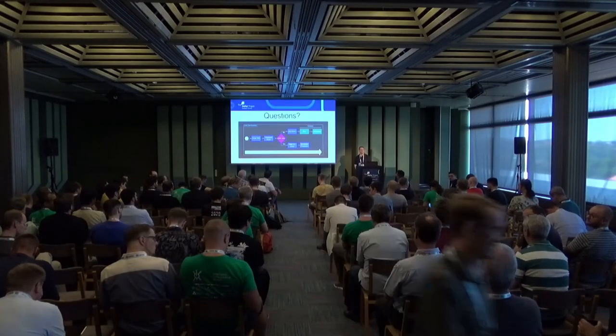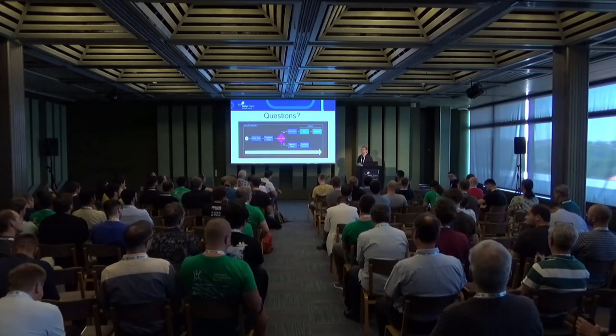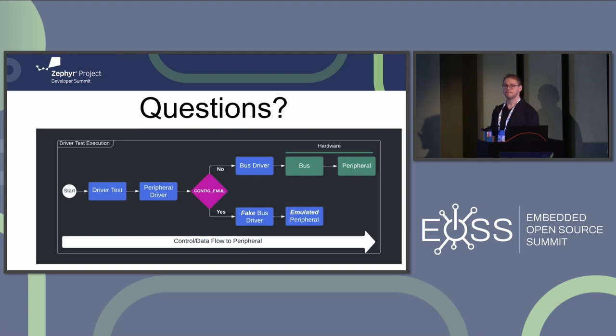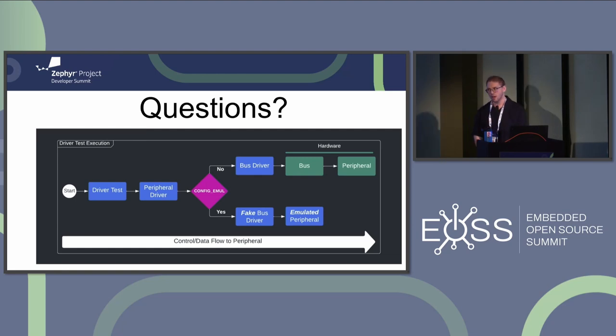Which bus types are currently supported? I2C, SPI, and eSPI. More can be added. There are native POSIX nodes for each. A virtual audience question asks if this works on fully embedded devices like Nordic or Raspberry Pi — Aaron sees no reason why it wouldn't, since it's just code compiled into the binary. If the question was about emulating an entire board, combining this with QEMU allows you to do both together.